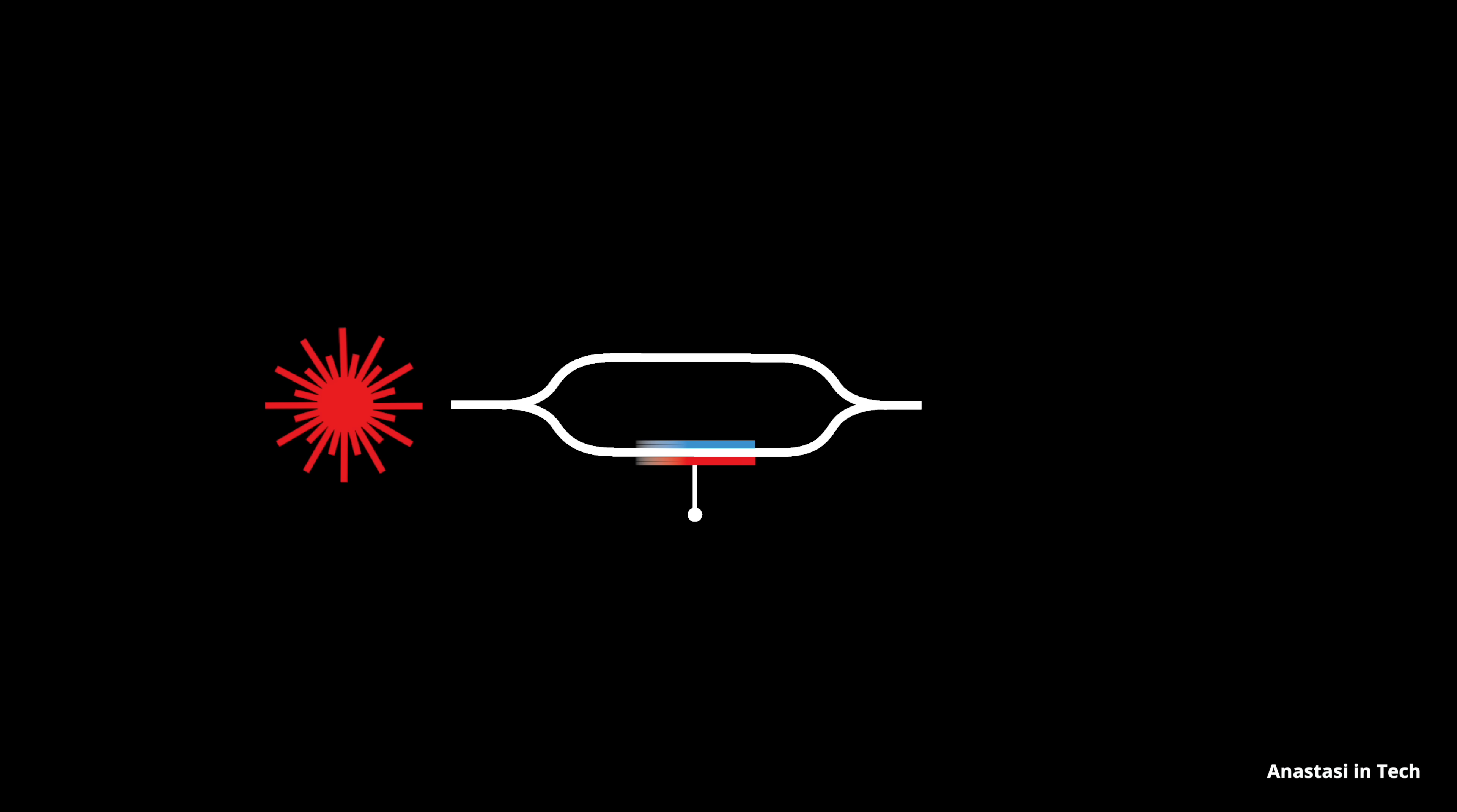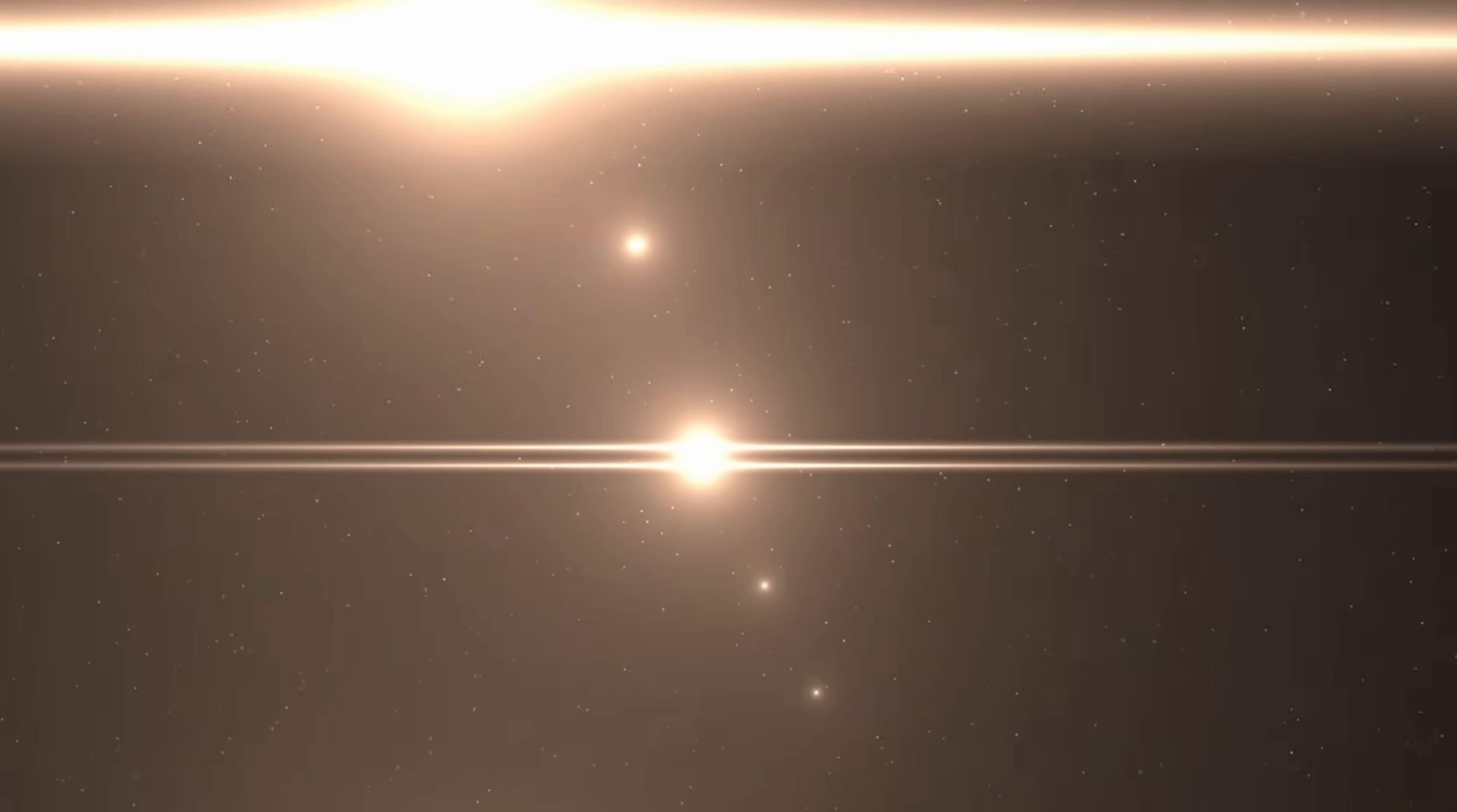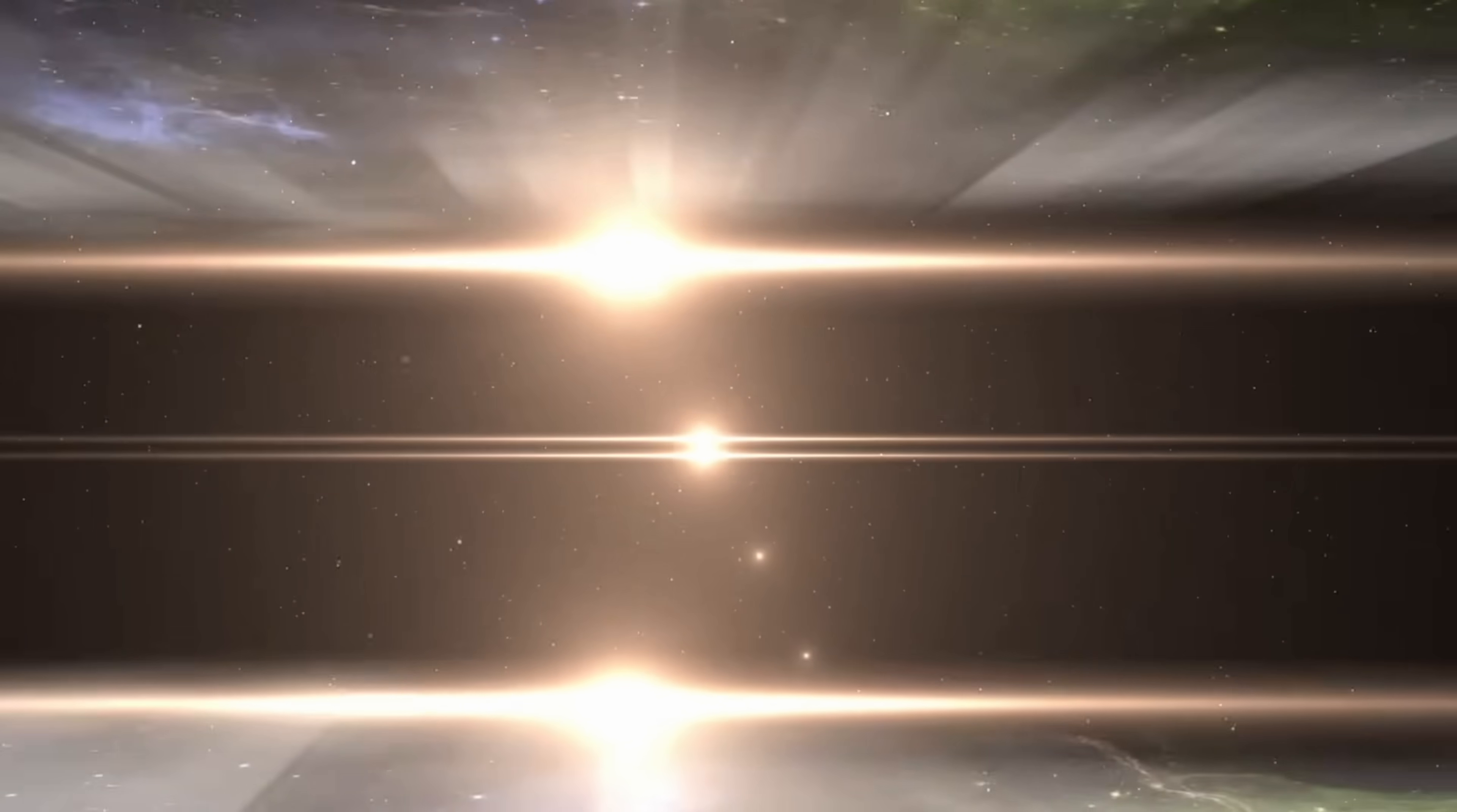First, light enters at one end, and it's split into two separate paths. Kind of like a road for photons that splits into two lanes. Normally, the light from both branches recombines at the end, interfering constructively, which means the output light equals the input light. But in case we apply a digital signal to one of the paths, something changes. That signal shifts the phase of the light in this branch, altering the way it interferes at the output. And that's how we can modulate the light. We are literally encoding digital bits into the intensity of light.